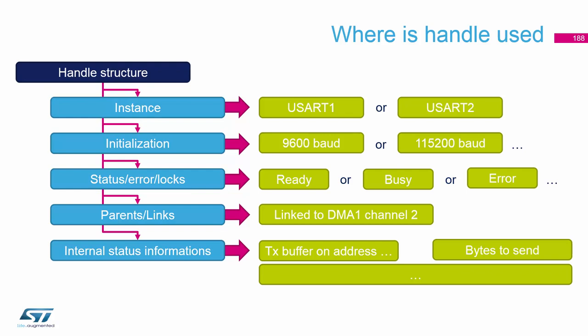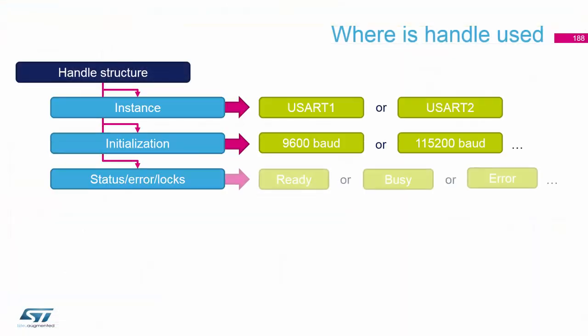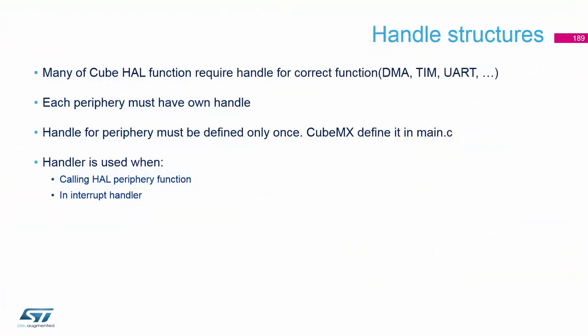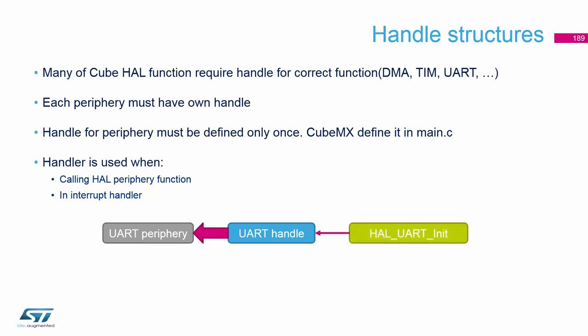This is the reason why the handle must always be present during transmitting. When we send data with the handle — in our case over UART — we have the physical UART on our chip and the handle in our software. When we want to initialize the periphery, we call the init function. This function stores all this information into the handle, and then during initialization the handle is used to store the correct parameters into the UART periphery registers.